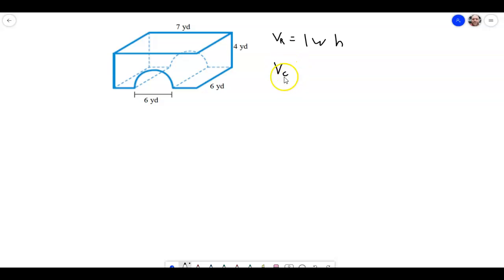And then we also need to know the volume of a cylinder. I'll put a little c there so I know that one is cylinder, and that's going to be the area of the base, which is the area of a circle, so that's pi r squared times the height of the cylinder.